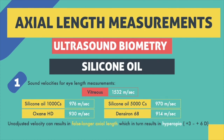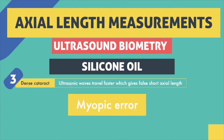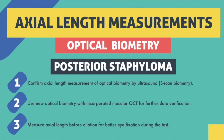Failure to adjust the velocity can result in false longer axial length measurement, which in turn results in postoperative hyperopic surprise. The shape of the IOL optic is also important in eyes filled with silicone oil — the recommended shape is convex-plano, whereas the worst type is bi-convex optic. Dense cataracts cause ultrasound waves to travel faster than usual, giving a false short axial length, which can result in more myopic results than intended. Posterior staphyloma is an issue in both optical and ultrasound biometry, typically dealt with by confirming optical biometry with B-scan. Newer devices with incorporated macular OCT can enhance accuracy. It is also recommended to measure axial length before dilation for better fixation.